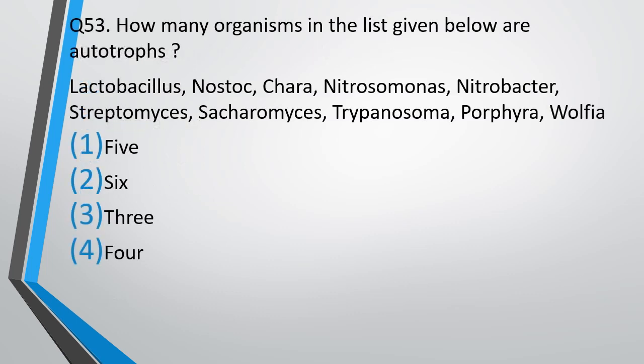Question No. 53. How many organisms in the list given below are autotrophs? The list includes: Lactobacillus, Nostoc, Chara, Nitrosomonas, Nitrobacter, Streptomyces, Saccharomyces, Trypanosoma, Porphyra, and Wolffia. The correct answer is Option 2: Six of these are autotrophs.